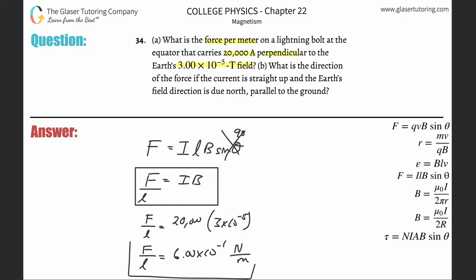That takes care of part A. Let's take a look at letter B: What is the direction of the force if the current is straight up and Earth's magnetic field direction is due north, parallel to the ground? Check out number 31 for an idea of how to apply this rule.